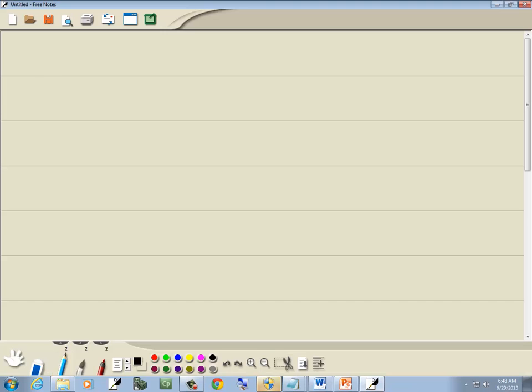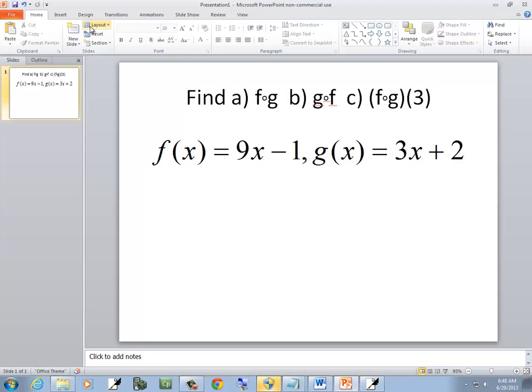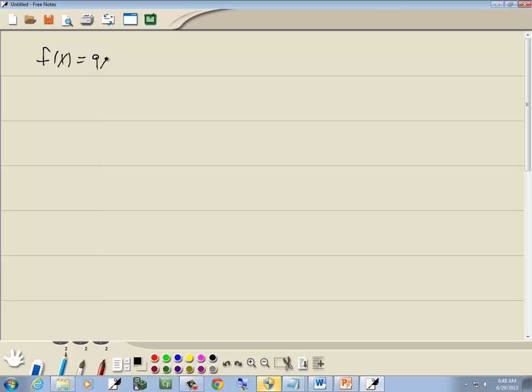So let's take a look at this problem. We've got f of x is equal to 9x minus 1, and g of x is equal to 3x plus 2.